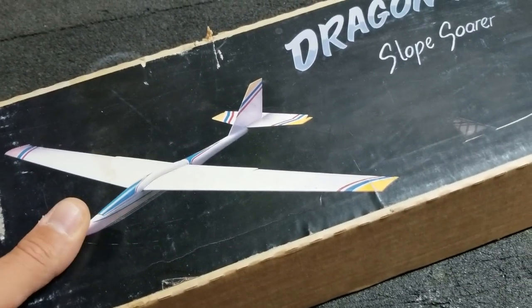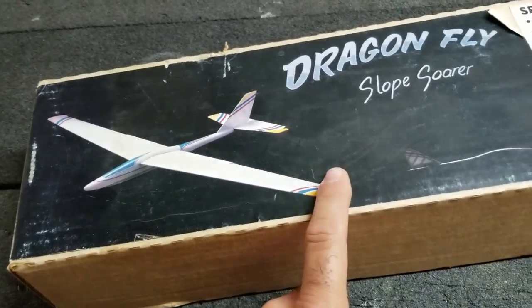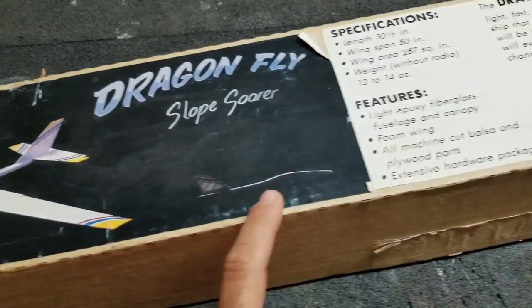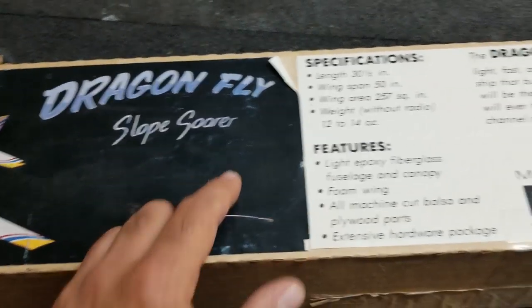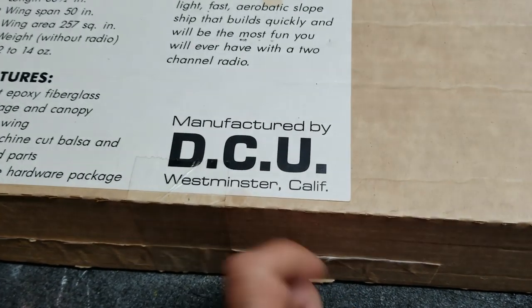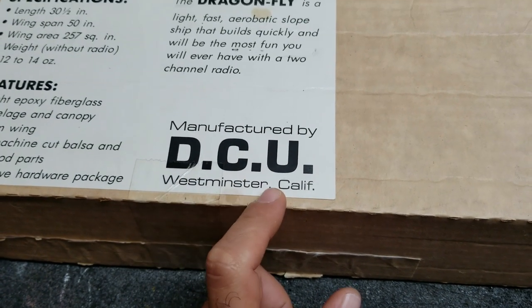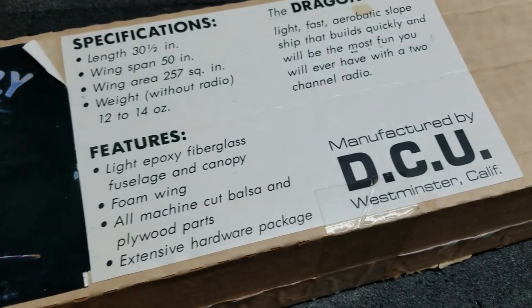What's up interwebs, it's Ollie from Flight Comp, and I'm going to show you guys an old school slope glider kit that I bought off RC Groups. It's a Dragonfly, and it was made by DCU from Westminster, California, which is in North Orange County in Southern California.